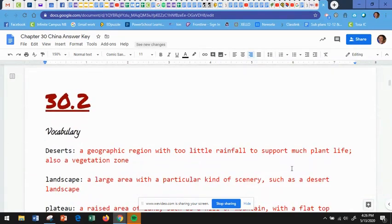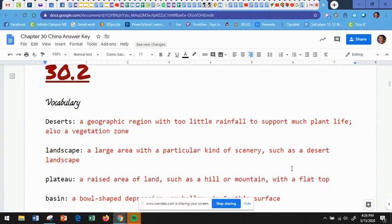Okay, now we're moving on to 30.2, which also has a lot of vocabulary words. One of the things I really like about this chapter is that it incorporates a lot of vocabulary words that we've already used this year. So it's a great way to kind of wind down the year. So the first vocabulary word is deserts. It's a geographic region with too little rainfall to support much plant life. Also, it's a vegetation zone. A landscape was a word that we haven't really used before. It's a large area with a particular kind of scenery, such as a desert landscape.